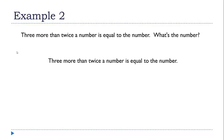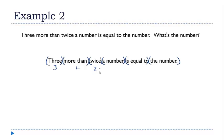I'm going to approach this problem the same way I did the previous one. I'll start by blocking the expression out into smaller parts: the 3, then 'more than,' 'twice,' 'a number,' 'is equal to,' and finally the number. Translating those parts: the 3 becomes the number 3, 'more than' becomes plus, 'twice' becomes 2 times, 'a number' is what we're looking for so I'll replace it with the variable x, 'is equal to' becomes equals, and again the number is just the variable x.